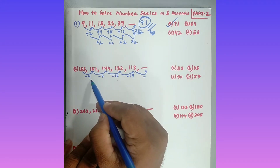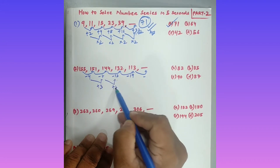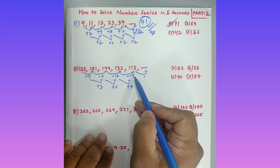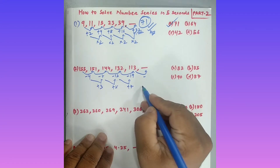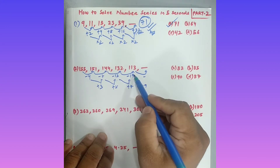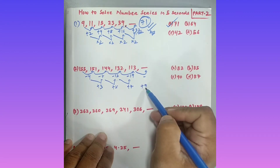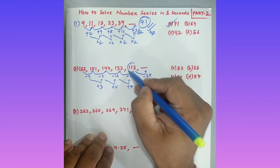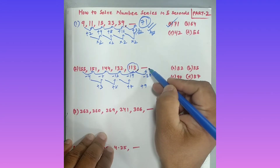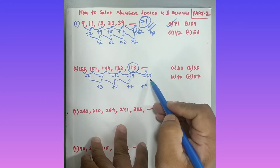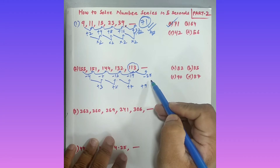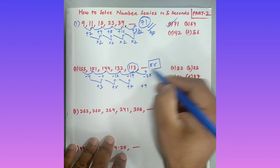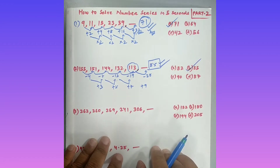Looking at the differences 4, 7, 12, 19: 4 plus 3 equals 7, 7 plus 5 equals 12, 12 plus 7 equals 19. So the next difference is 19 plus 9 equals 28. Therefore 113 minus 28 equals 85. The answer is 85.